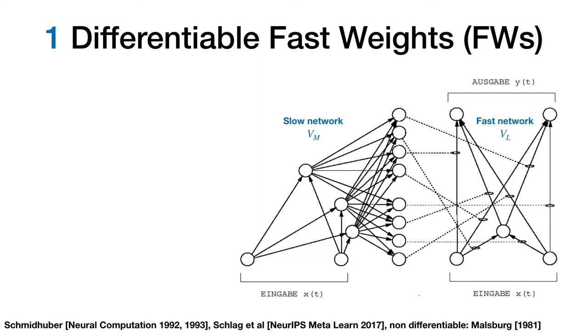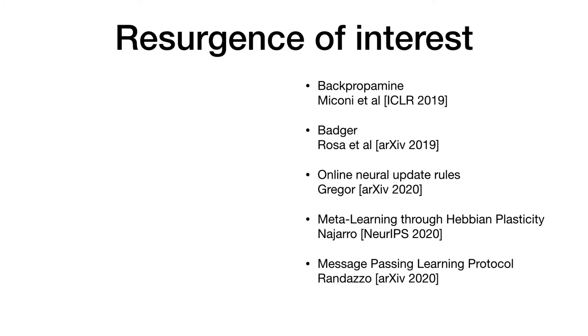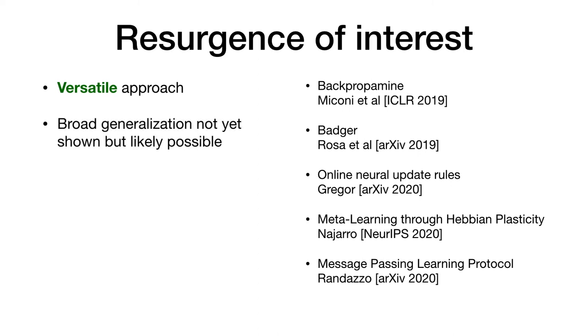Fast weights can be seen as a generalization of learned learning rules. Many different flavors exist. But the approach basically describes slow neural networks that generate or modify the fast weights of another or the same neural network. On the right is such a fast weight mechanism, where a slow network generates the weights of a fast network conditioned on the input. Other variants update fast weights locally, out-of-product based, gated, or even self-referential. And the well-known hyper networks are also a kind of fast weight approach. Learned learning rules and fast weights have recently seen a new surge in interest. The approach is quite versatile, and thus in principle holds great promise for general meta-learning. Although to this point, broad generalization ability has not been shown yet. So we may ask ourselves, are learned learning rules and fast weights the way to go for future general meta-learning systems?